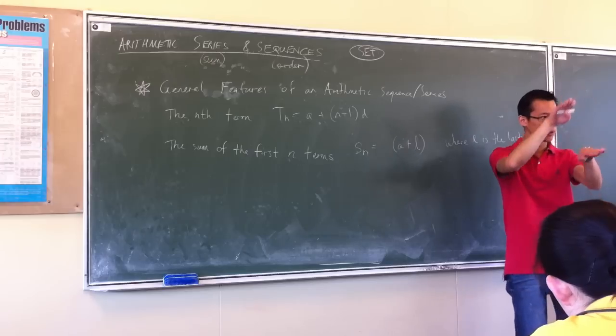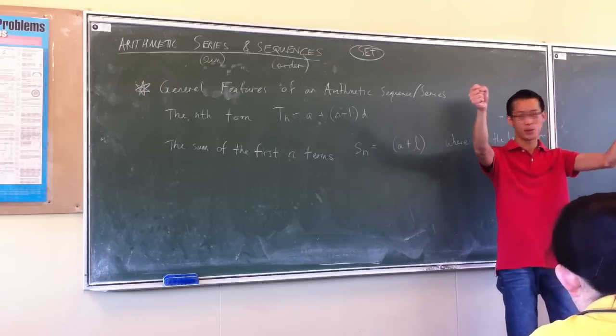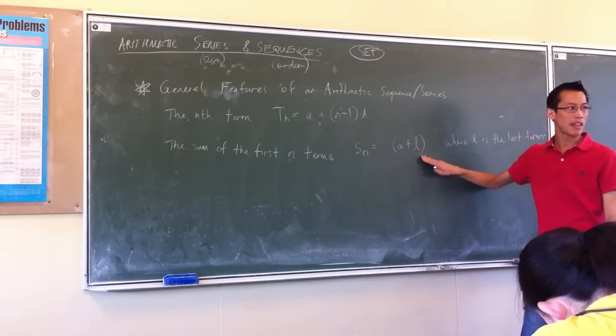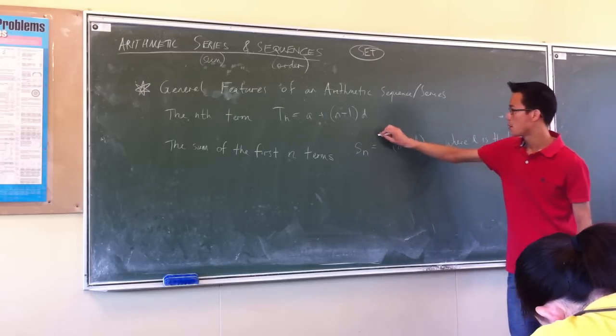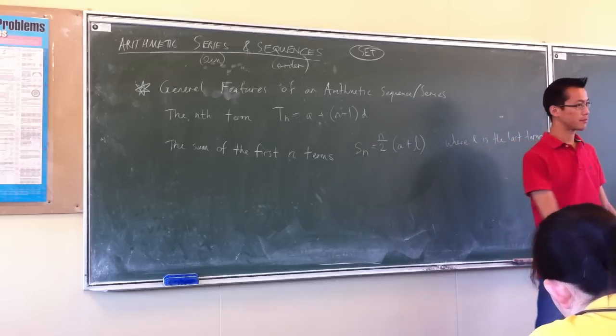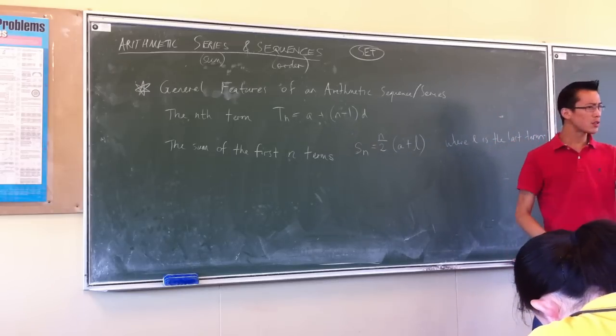And then with that sum, that was the 100 number that turned up when we paired those up, right? I had to multiply that by how many pairs I've got, right? Which is n on 2, okay?